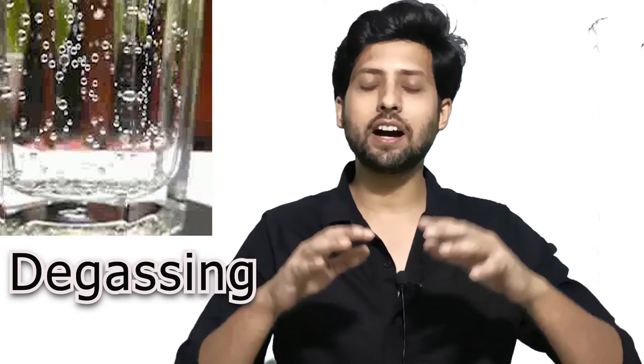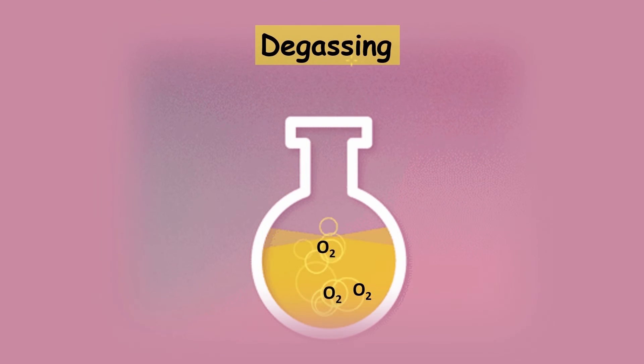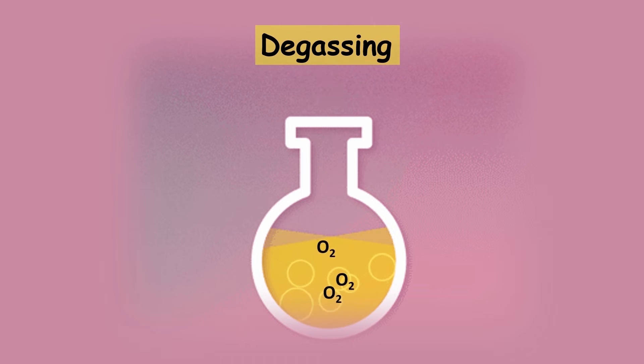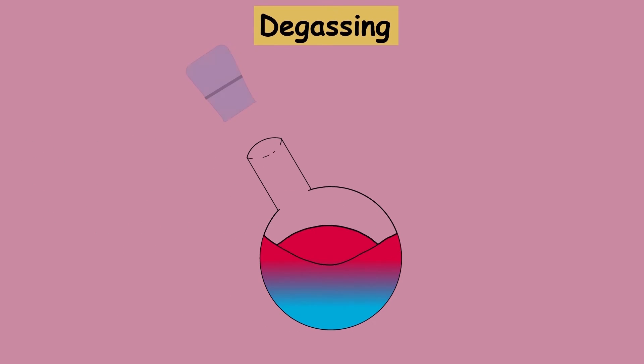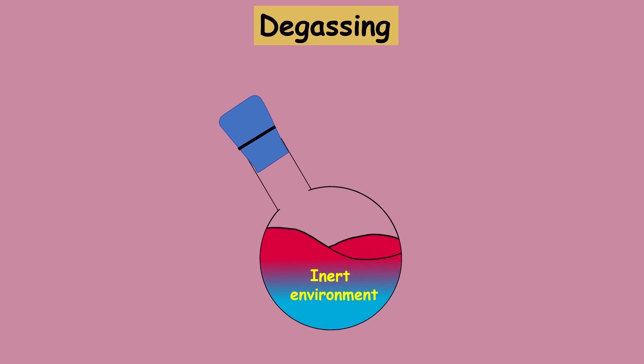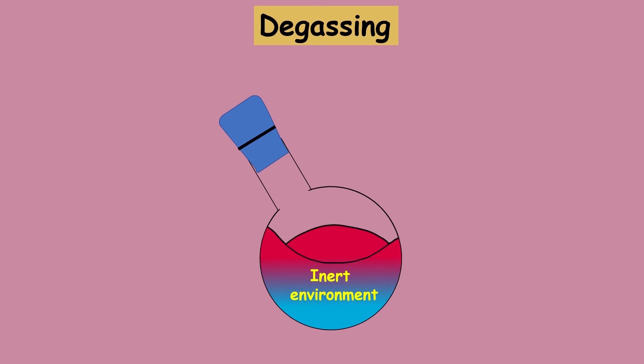So you have to learn one very important technique known as degassing. With this technique you can maintain an inert condition for your reaction, which will give you a better yield and increase the chances of your reaction being successful. We will learn this technique through animation in this video. Degassing, also known as degasification, is the removal of dissolved gas — specifically oxygen — from solvents or solutions, providing an inert environment so that no external impurities like unwanted gases can interrupt the reaction.